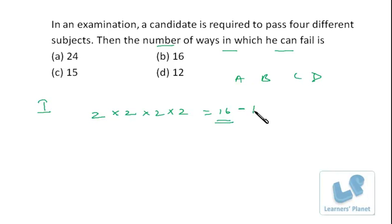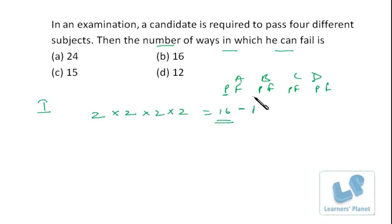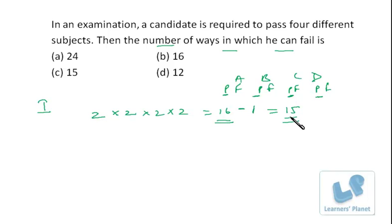Since we chose pass/fail for each subject, there is exactly one case where he passes all four subjects. We deduct that single case from 16, and we get the answer: 15. Alternatively, he has to fail in at least one subject.